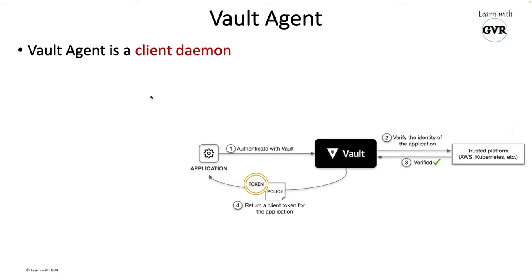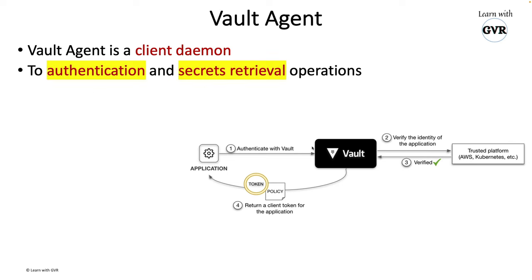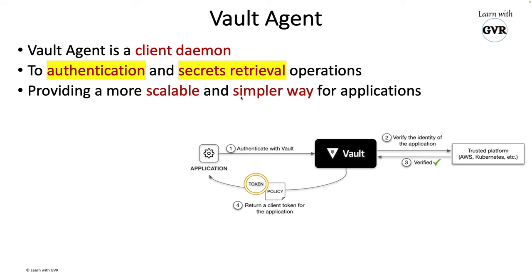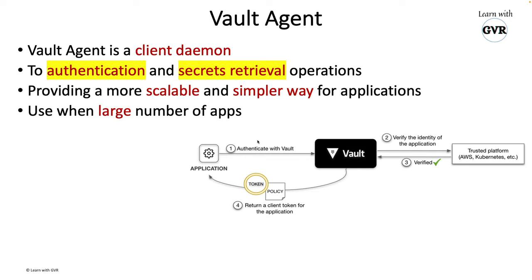Vault Agent is a client daemon — a service which runs in the background during restarts as well. Its purpose is to authenticate to the Vault system and read secrets. The benefit is it provides a more scalable and simpler way for applications. You can use Vault Agent when you have a large number of applications, pods, or batches that need to deal with the Vault system.